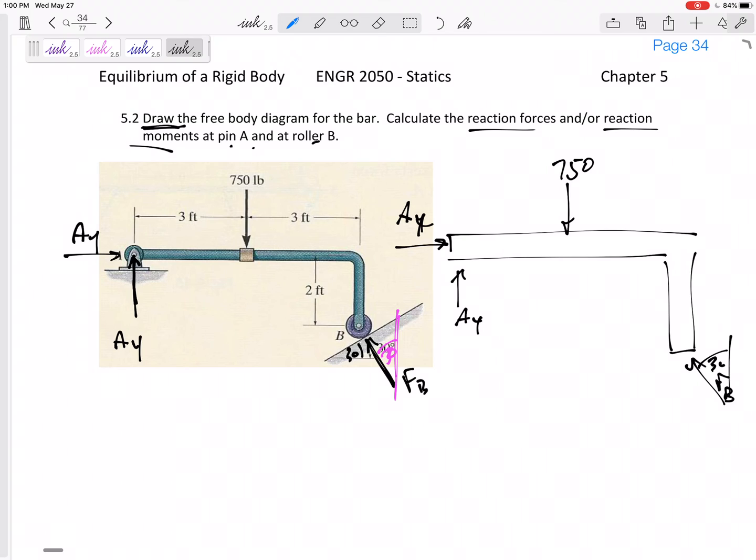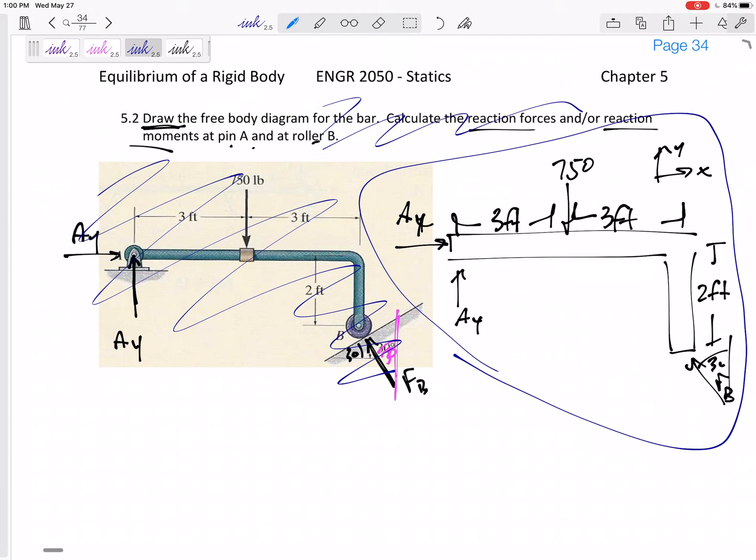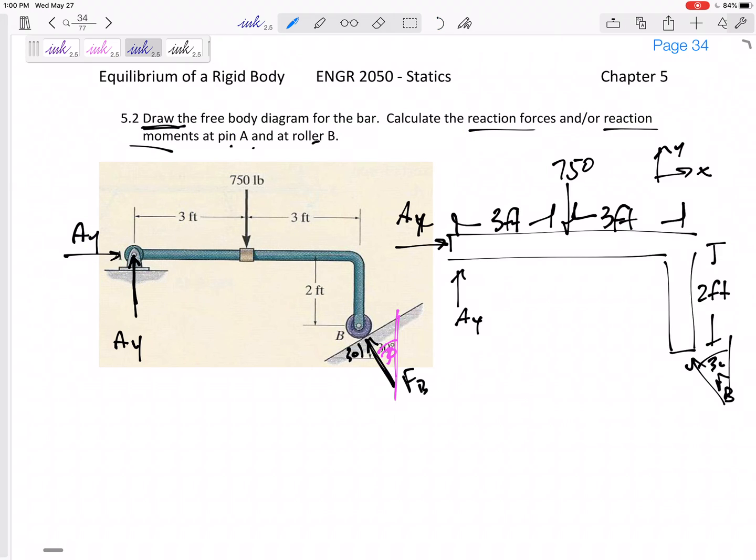In my class, when I ask for free body diagrams, if you're drawing it in your notes or on a test, if I explicitly ask for it, I want it to be self-sufficient. So I want you to include axes, dimensions, angles, things like that. So now I can just refer to my free body diagram - I don't have to go back and look at the figure.